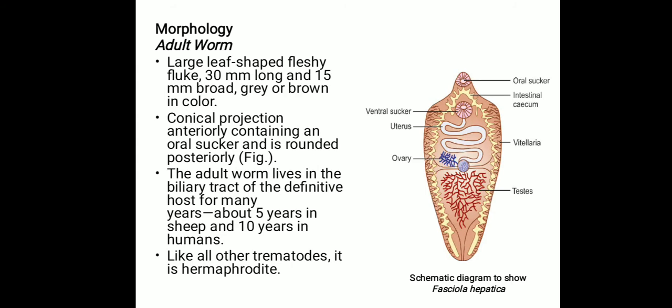The habitat of this parasite is the liver and biliary passages of the definitive host. Regarding morphology, we have the adult worm and the egg. The adult worm appears as a large leaf-shaped fleshy fluke, 30 millimeters long and 15 millimeters broad, gray or brown in color.